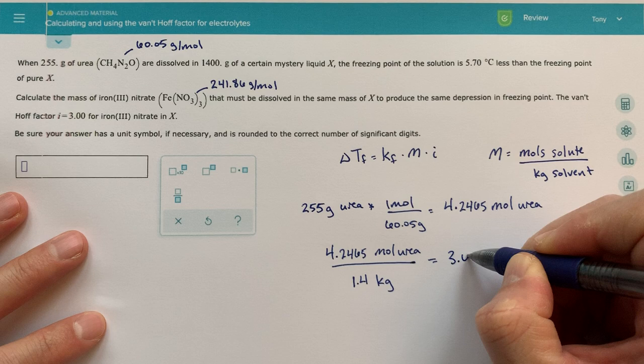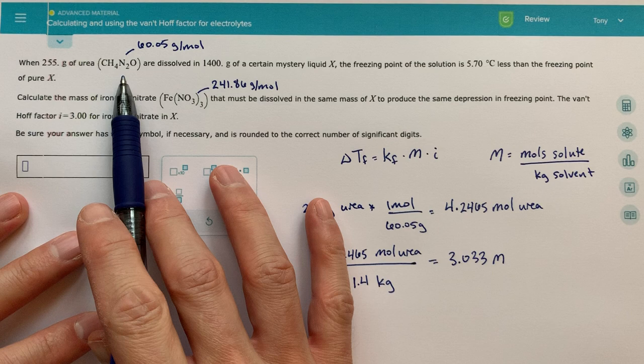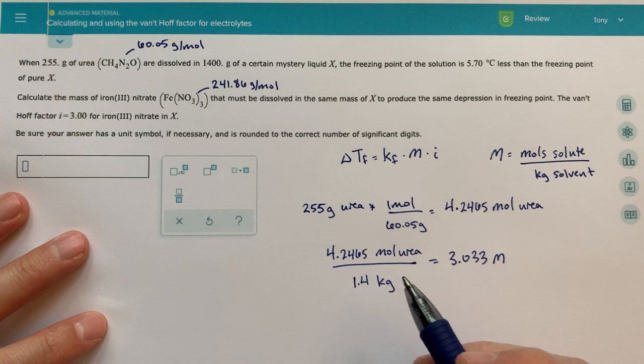3.033 molal. So this is going to be the molality of our urea solution, which we can use in our freezing point depression equation here.